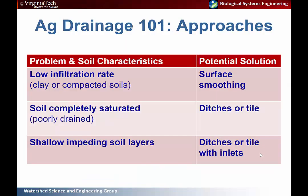Different approaches are needed depending on your soil conditions and the actual problems you're experiencing. With low infiltration rates such as high-clay or compacted soils, you'll get surface ponding — a potential solution is smoothing the surface to prevent irregularities. If your soil is completely saturated in the root zone with poorly drained soil, consider tile or ditching. With shallow impeding soil layers causing saturation and ponding, consider a ditch system or a tile system with surface inlets to more quickly remove water.